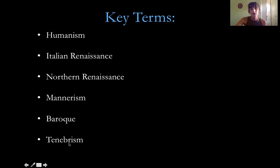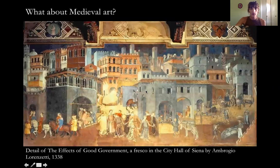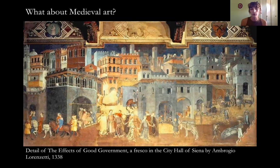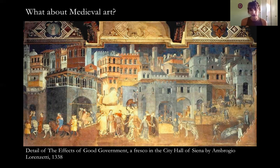We will head north to talk about Renaissance art in Northern Europe, and then we'll move on near the end of the Renaissance where we'll see two movements emerge: Mannerism and Baroque. Within the Baroque material we'll also talk about tenebrism — a specific type of lighting with really high contrasts of lights and darks utilized in the Baroque period. But before we really think about what the Renaissance is, we have to think about what happens before the Renaissance, since the term Renaissance means rebirth — signifying that something has died.